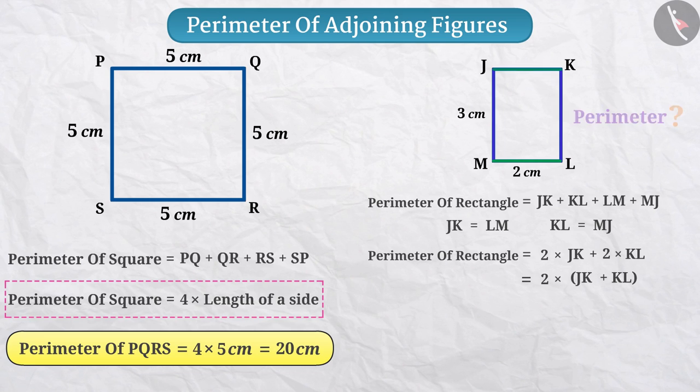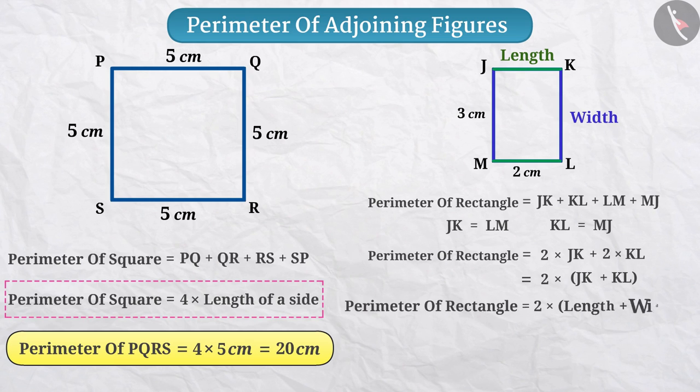If you know the length of the rectangle and the side KL as the width of the rectangle, then the perimeter of the rectangle is equal to 2 multiplied by length plus width. If you know the length and width of a rectangle, then you can find the perimeter of that rectangle using this formula.